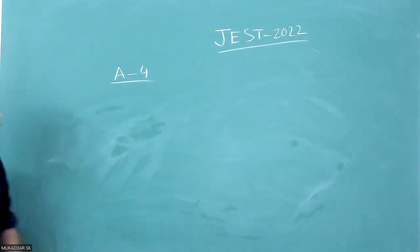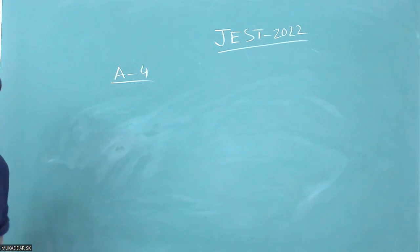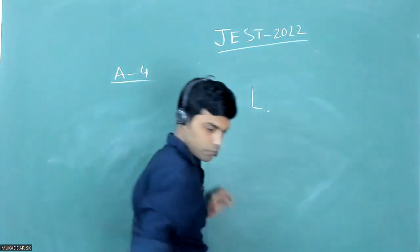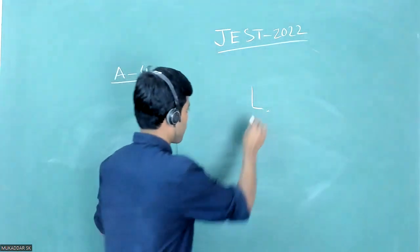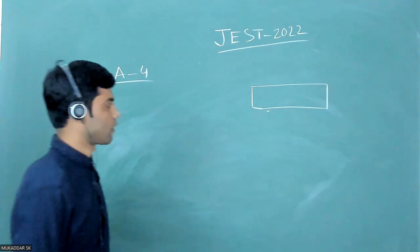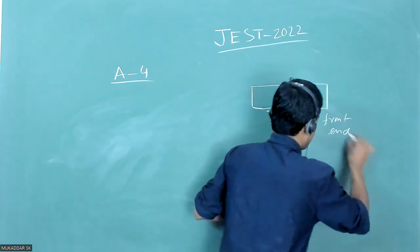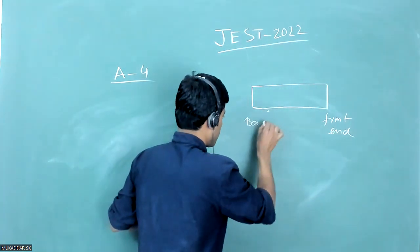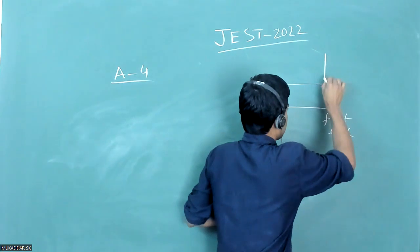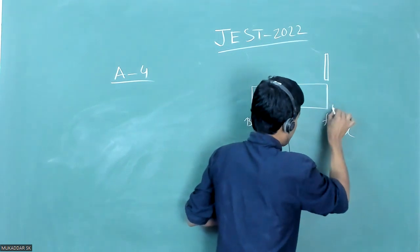Students, today we are going to solve a question from JOST 2022, question number A4. It is a part of basic mechanics. The question is: you have a train moving with constant acceleration. The front end is crossing a pole with speed u.